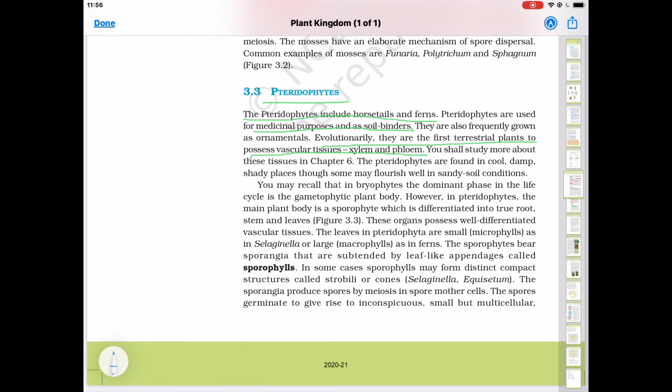As in case of bryophytes the dominant phase in the life cycle is gametophyte, but in pteridophytes the main plant body is sporophyte has 2n number of chromosomes which is differentiated into true root stem and leaves. So in pteridophytes true roots true stem and true leaves are present.